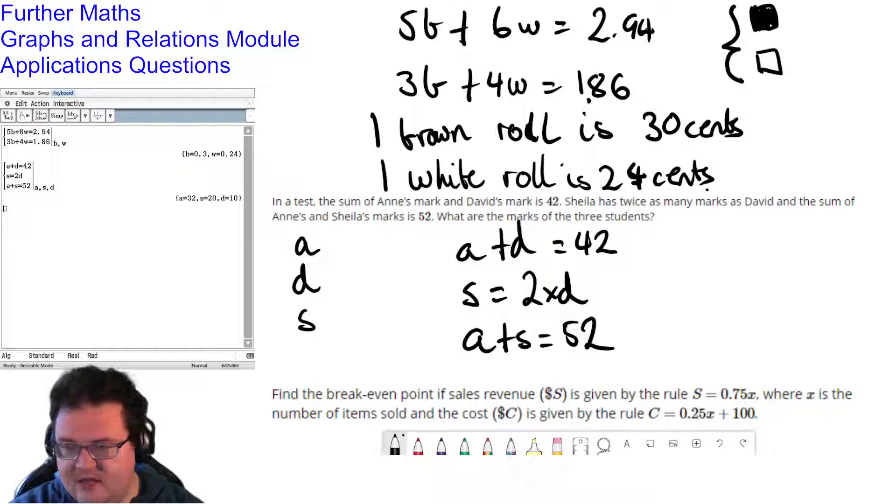So it's telling me a equals 32, d equals 10, and s equals 20.